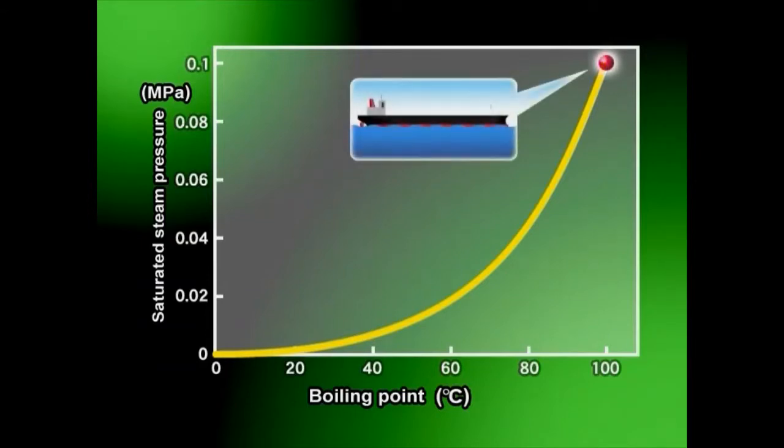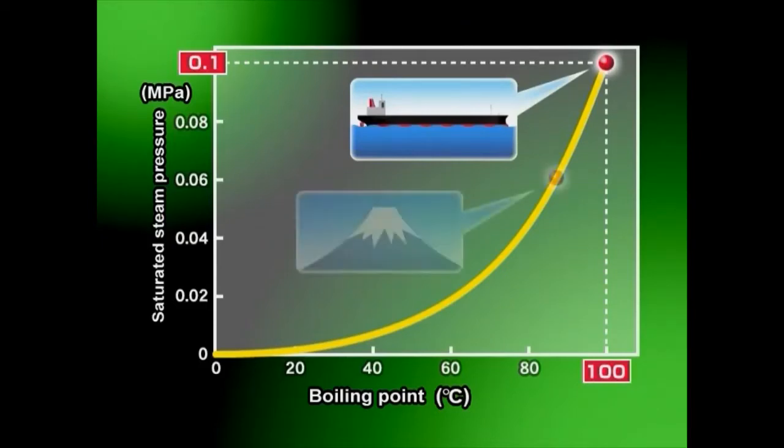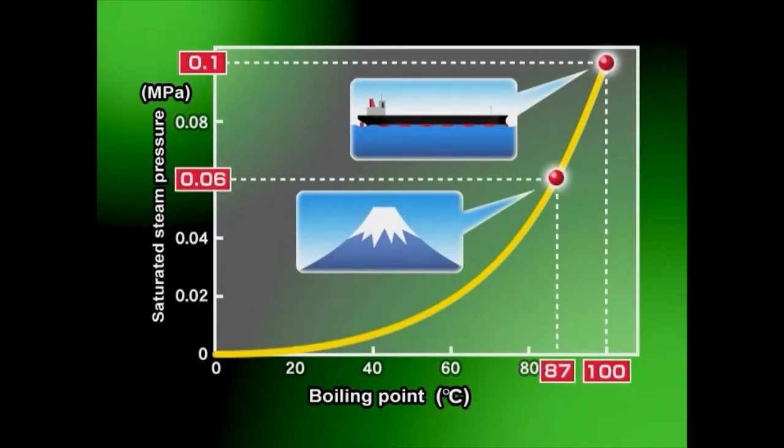Water boils at 100 degrees Celsius under one atmosphere, or 0.1 megapascals. But on top of Mount Fuji, the atmospheric pressure drops to 0.06 megapascals, causing water to boil at 87 degrees Celsius. As a result, the critical pressure at which a liquid begins to boil under a certain temperature is called saturation vapor pressure for that temperature. The lower the saturation vapor pressure, the lower the boiling point. In other words, vapor bubbles in cavitation occur where water pressure is low.